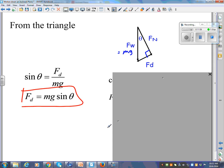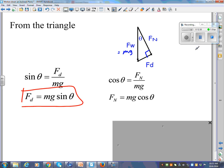So we've got a formula for Fd, now we need a formula for Fn. I'm going to use cosine. Fn is adjacent, so cos theta equals Fn over mg. And how does that shake down? Fn equals mg cos theta. Put a box around it. You're going to use it.